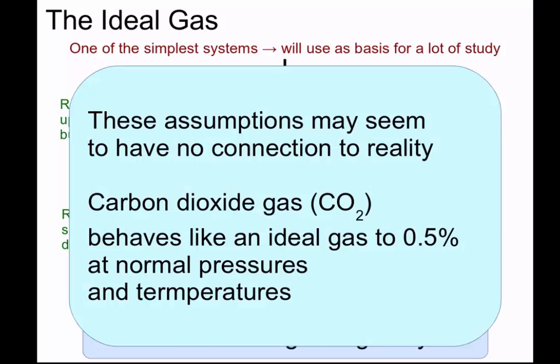In fact carbon dioxide gas behaves like an ideal gas to 0.5 percent accuracy at everyday pressures and temperatures. So we can use the ideal gas to get a very good idea of how real gases are behaving under a variety of typical conditions.